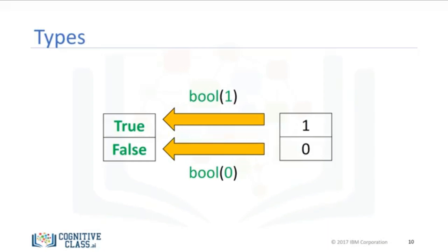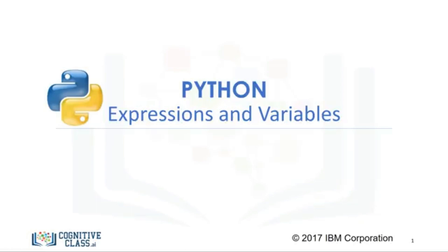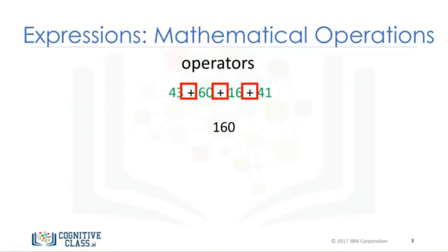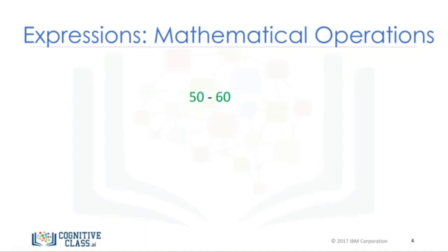In this video, we'll cover expressions and variables. Expressions describe a type of operation the computers perform. Expressions are operations that Python performs. For example, basic arithmetic operations like adding multiple numbers. The result is 160. We call the numbers operands, and the math symbols — in this case addition — are called operators. We can perform operations such as subtraction using the subtraction sign. In this case, the result is a negative number.